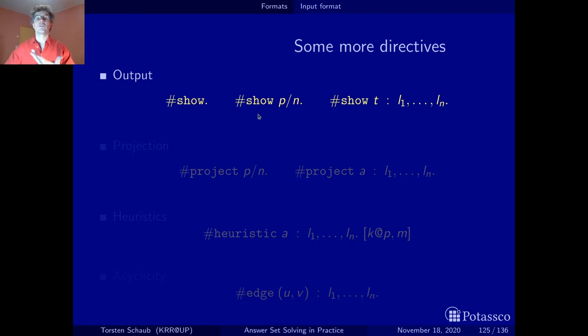Then afterwards, you write the ones you want to show, like for instance, queens/2. You want to show all atoms of the predicate queens, which has two arguments. If there's one with three arguments, it will not be shown. This is the standard way.